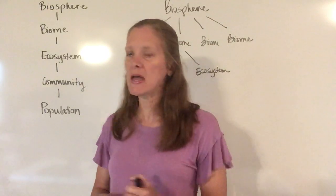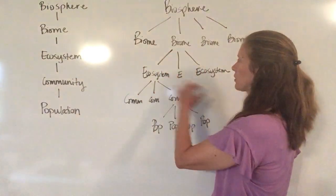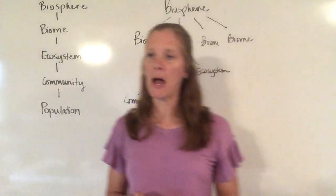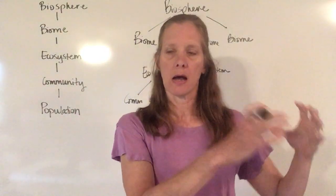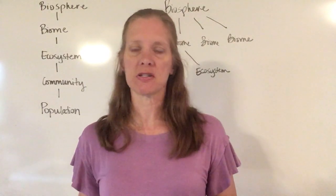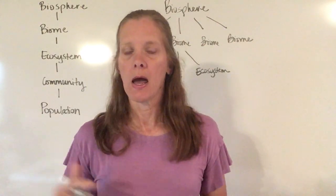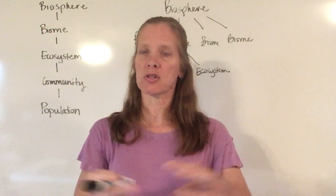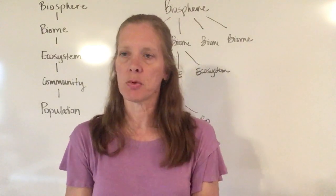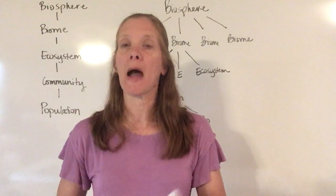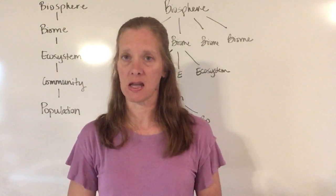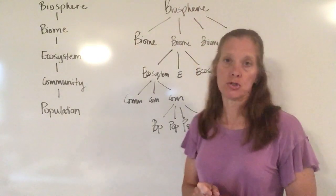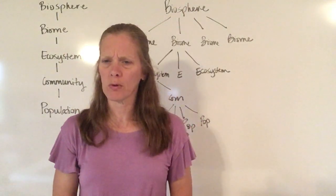Then a whole group of ecosystems is going to go together and that's going to make a biome. So every section of the African savanna that we were talking about — every small area — when you group all of those ecosystems together, that's when you're going to have the entire biome of the entire African savanna. And then all of the biomes together go into making our earth.